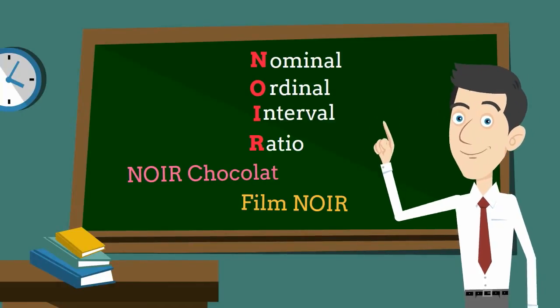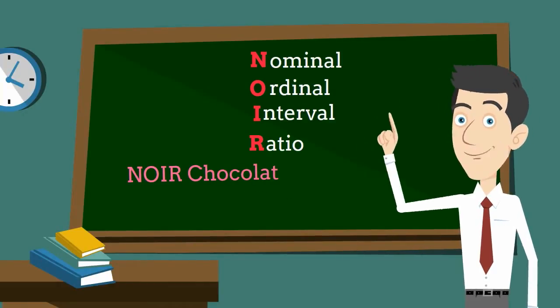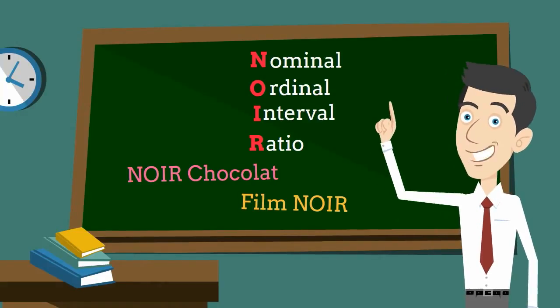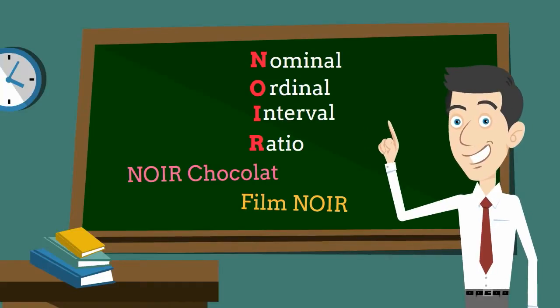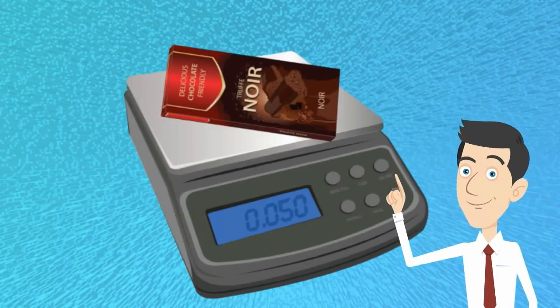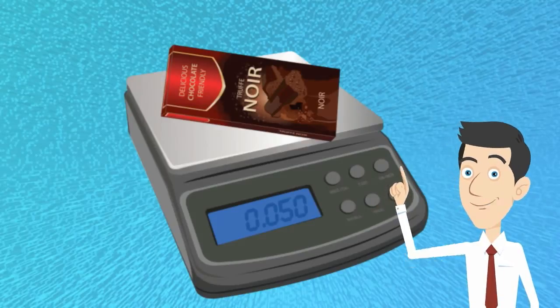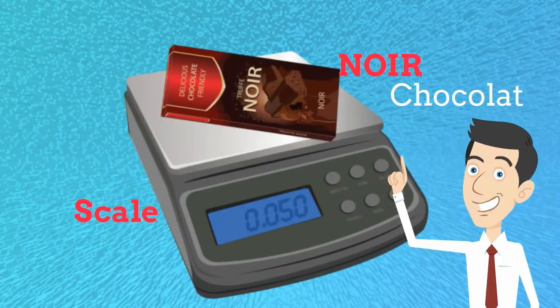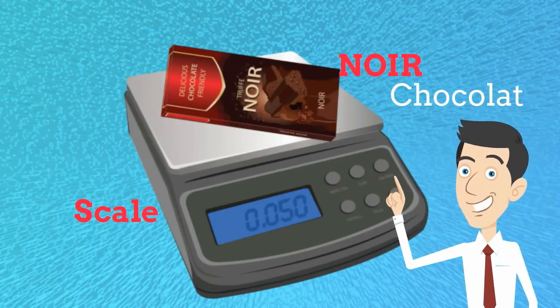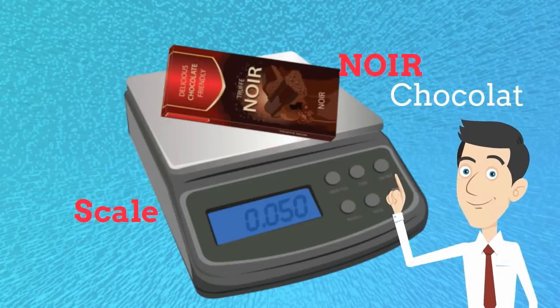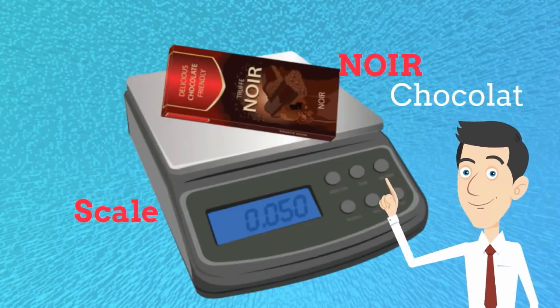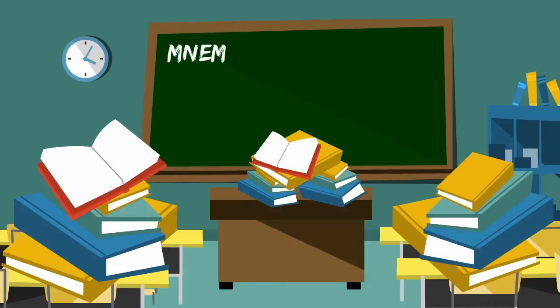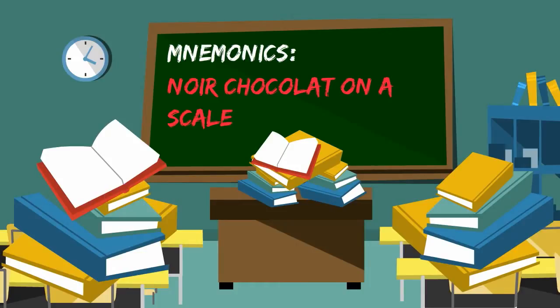To help you memorize, we have a mnemonic picture here. Like before, we have a dark chocolate placed on a scale, so you can associate the scale as a scale of measurement and the dark chocolate to help you memorize the keyword noir. With this picture, it's actually very hard to forget it in the exam and get it wrong.